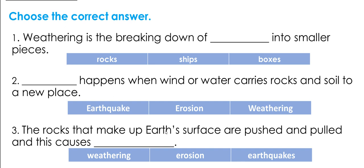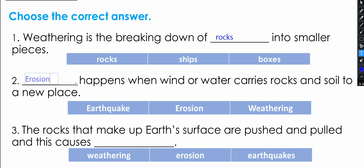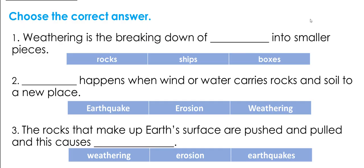For number one, weathering is the breaking down of rocks into smaller pieces. For number two, when wind or water carries rocks and soil to a new place, that is erosion. For the last one, rocks that make up Earth's surface are pushed and pulled, and this causes earthquakes. Thank you so much — I hope you bring a full mark in your unit test, insha'Allah! Bye bye!